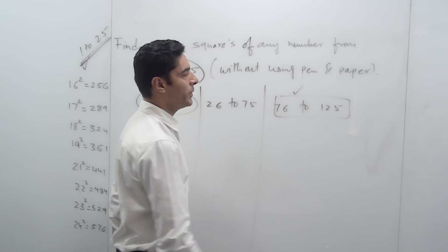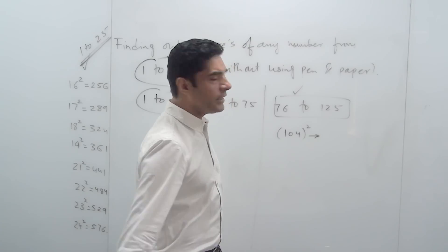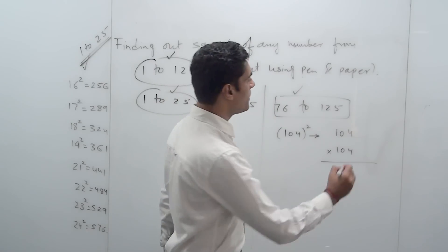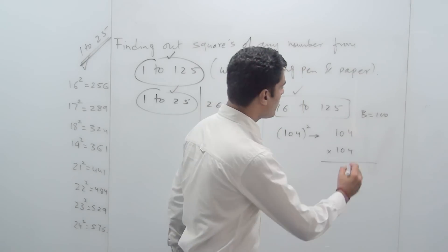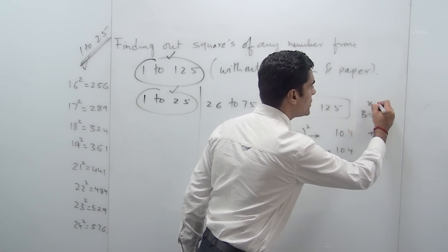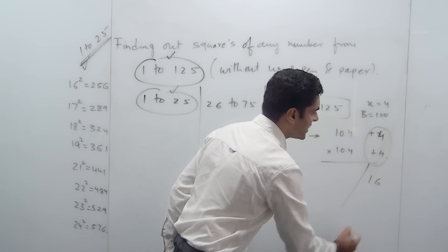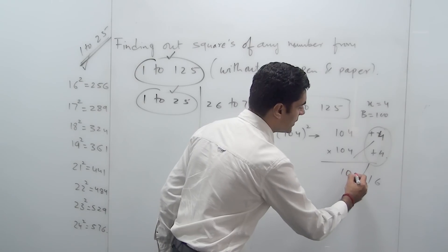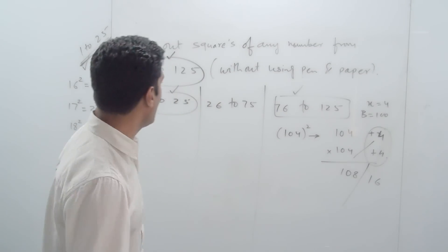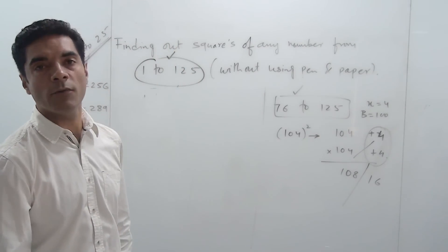Let's say I want to first start and find the square of a number, say 104. That is very similar to multiplying 104 with 104. If I wanted to multiply it using the base method, I would have taken a base of 100. I compare 104 with 100, so I get a surplus of 4 in both cases. I'm introducing a variable x which is 4 in this case. My answer would have been the multiplication of the surplus which is 16, and then the addition of 4 with 104 which is 108. This has involved a lot of writing and I wanted to give you a direct formula for finding out a square.